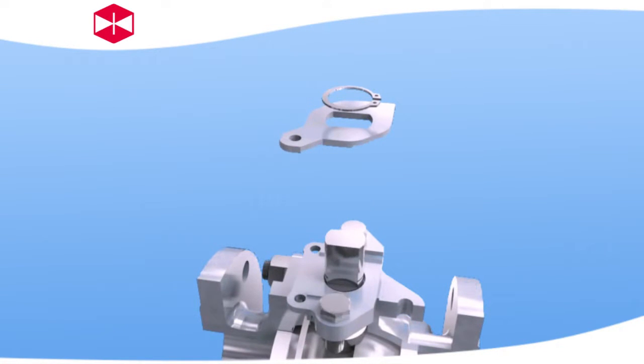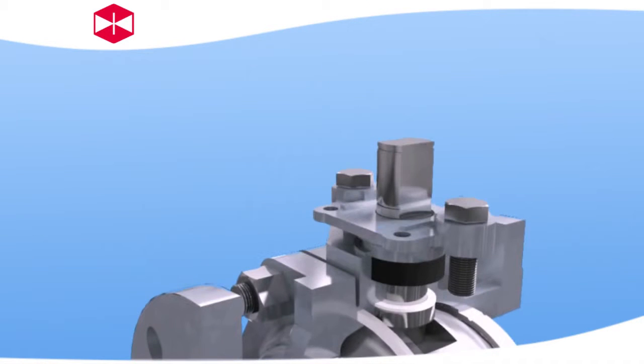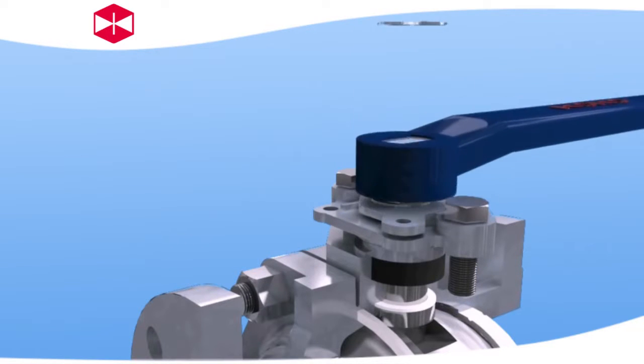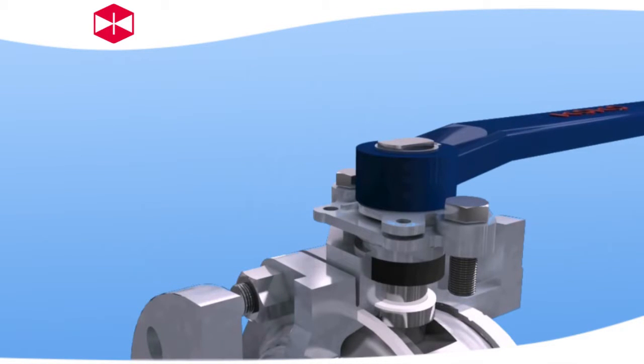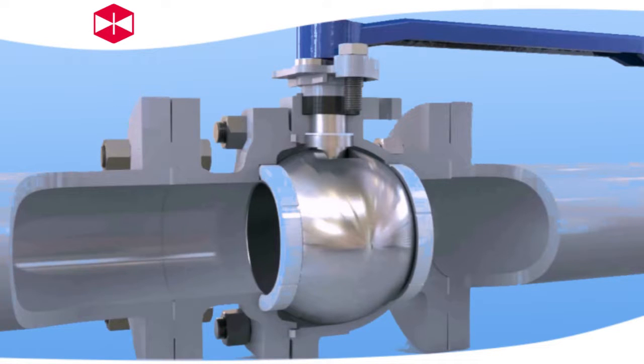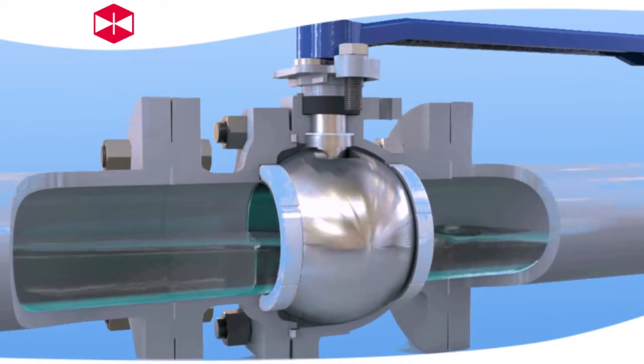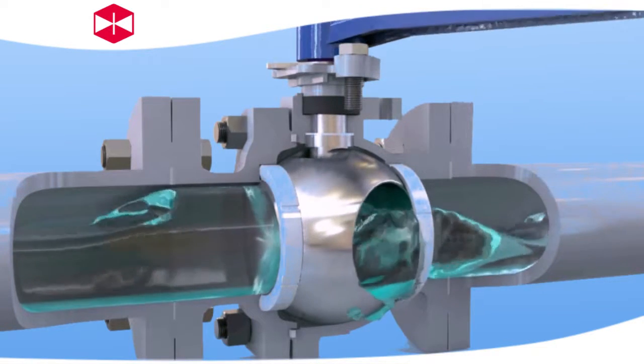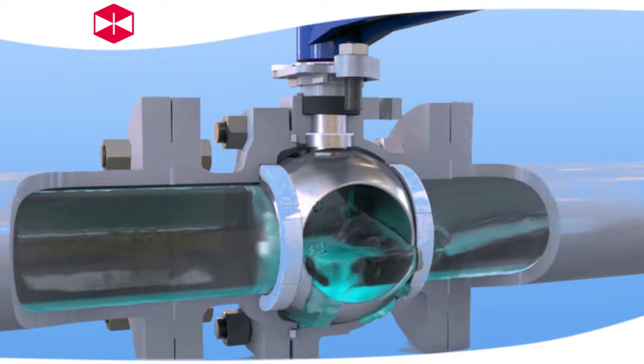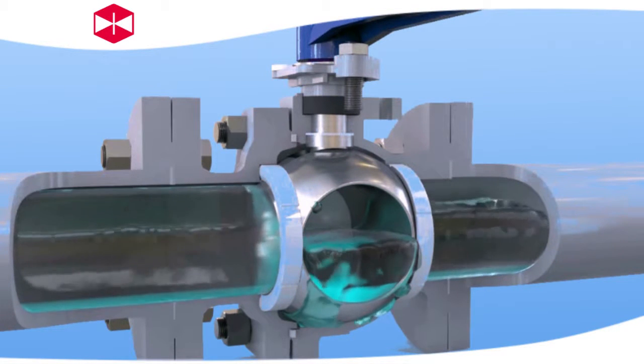Second, small resistance. When the ball valve is open, the section areas of ball channel, body channel, and the connection pipeline are the same. The medium flowing through the ball valve is equal to flowing through the section of direct piping. The flow resistance of the ball valve is minimum of all kinds of valves.